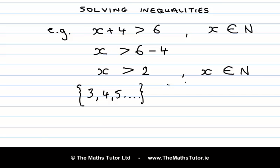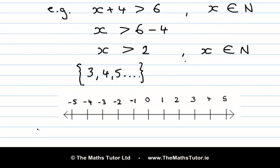Let's plot that solution and see what it looks like. So we draw a number line and mark the elements on it. So 3, 4, 5 and so on — we draw an arrow to show that it goes on forever. We don't include 2. Each of these is greater than 2, so x is greater than 2: 3, 4, 5 and so on.